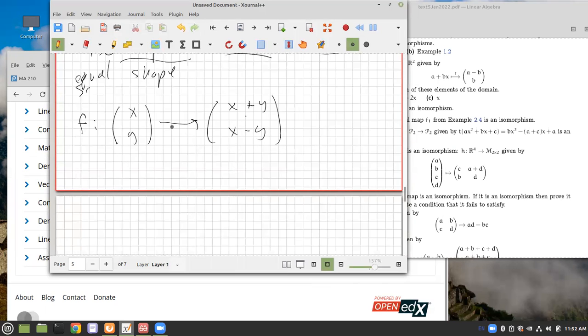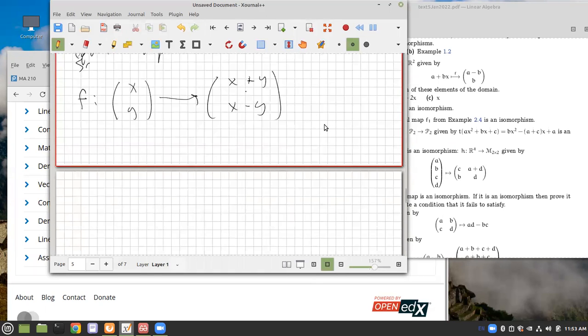So the question is, is this a linear map? And is it an isomorphism? Well, we could check, first of all, is it linear? How do we check that? So we have to check linearity. Is it a linear map?